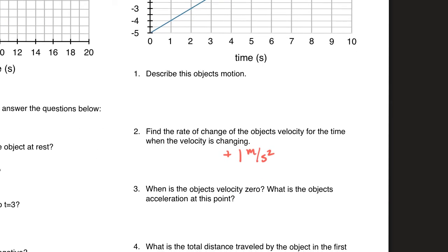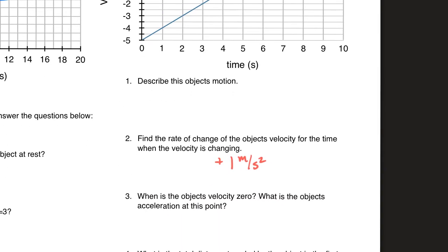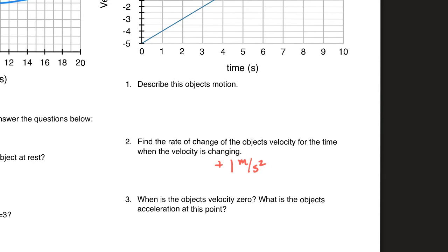When is the object's velocity zero and what is the object's acceleration at this point? This tests whether you understand that just because the object isn't moving doesn't mean it has no acceleration. There are two questions — you must answer both. The velocity is zero at five seconds, and the acceleration is still positive one meter per second squared. You could write: stopped at five seconds with an acceleration of positive one meter per second squared.